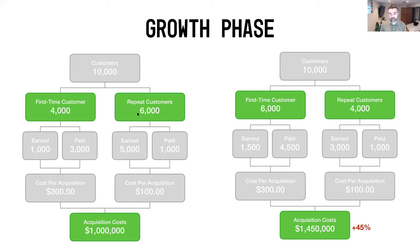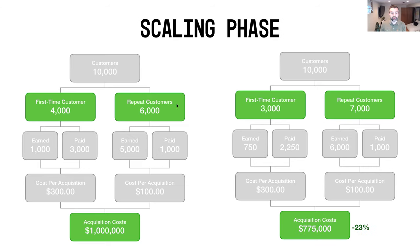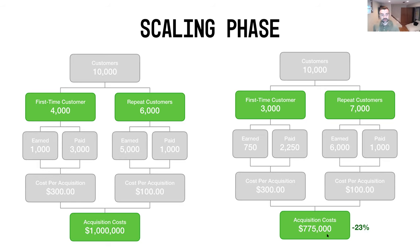Now let's look at a more mature, faster-scaling business. Keeping 10,000 customers constant, we push to 3,000 first-time and 7,000 repeat customers. With the same 75/25 split, that's 2,250 paid first-time customers at $300 = $675,000, plus 1,000 paid repeat customers at $100 = $100,000. Total: $775,000 — a reduction of about 23% compared to the base case. The more repeat customers you have, the less you spend on acquisition overall.